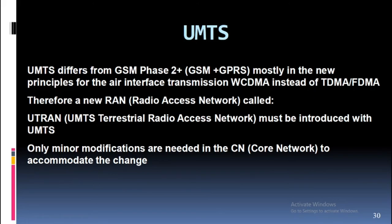UMTS differs from GSM Phase 2+ and GPRS mostly in the new principles for the air interface transmission — WCDMA instead of TDMA/FDMA. Therefore, a new Radio Access Network (RAN) called UTRAN (UMTS Terrestrial Radio Access Network) must be introduced. With UMTS, only minor modifications are needed in the Core Network (CN) to accommodate the change.